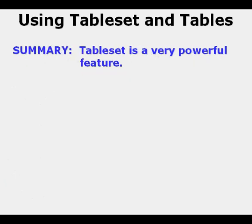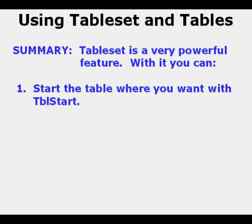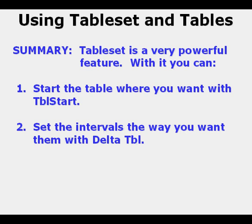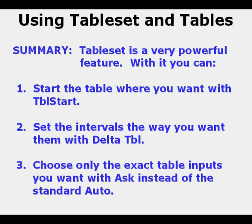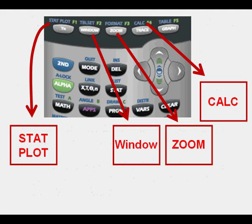To summarize: Table Set is a very powerful feature of your graphing calculator. With it you can start the table where you want with Table Start. You can set the spacing or intervals between input values in any amount you want using Delta Table. And you can choose the exact table values you want using Ask instead of the standard automatic inputs. There are follow-up video lessons regarding operations accessed by the function keys at the top of the keypad — the Stat Plot menu, the Window function, the Zoom menu, and the Calc menu. You may access any of these video lessons by clicking on the associated button in the bottom half of this image.